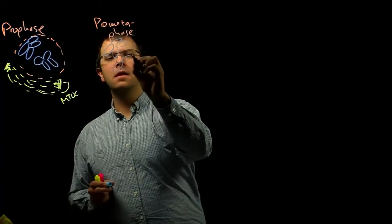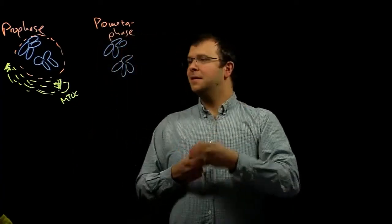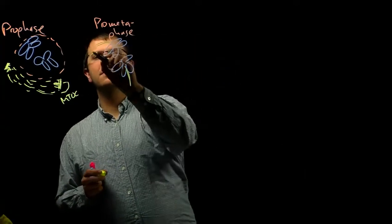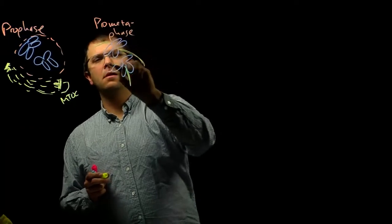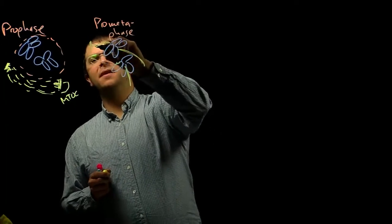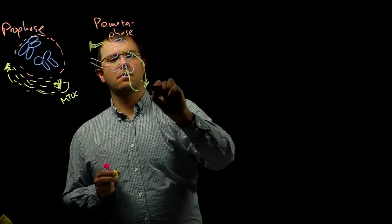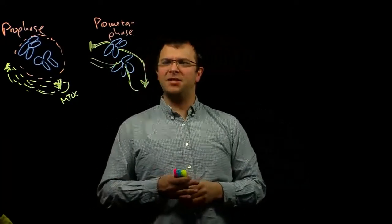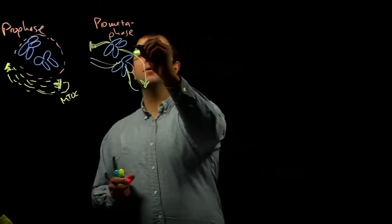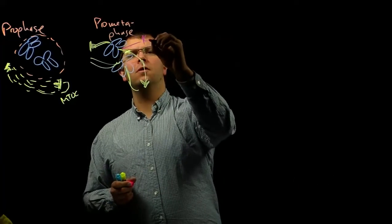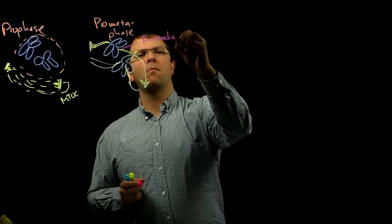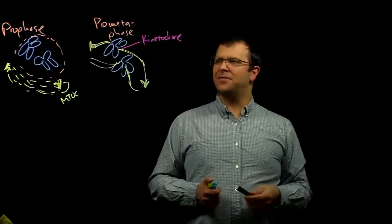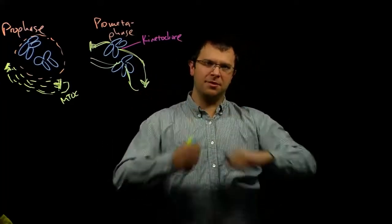As the nuclear envelope begins to break down, that allows the microtubules to attach to the centers of the chromosomes. The place that those microtubules are attaching to those chromosomes is a structure called the kinetochore, which are protein complexes that form at the one place that those two sister chromatids are still stuck together.